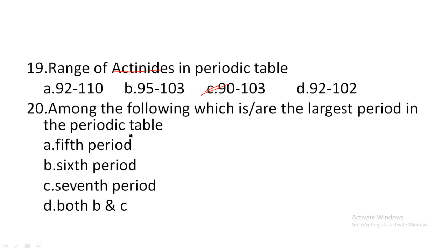Among the following, which are the largest periods in the periodic table? Option A: 5th period, option B: 6th period, option C: 7th period, option D: both B and C. The largest periods in the periodic table are the 6th and 7th periods, so option D, both B and C.